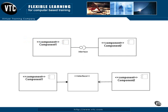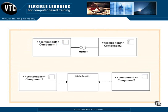So far, we've seen two different methods for showing how components interact with each other using interfaces. At the top of the screen, we have an assembly connector with the ball and cup notation that represents the interface through which component 1 and component 2 interact. And at the bottom of the screen, the interface is represented in a classifier box, and component 1 and component 2 are connected to the interface using realization and dependency arrows.